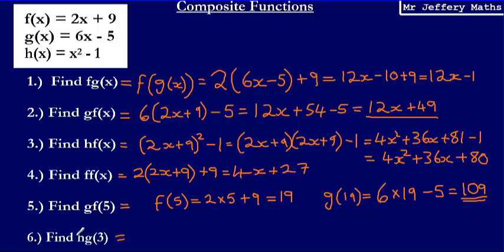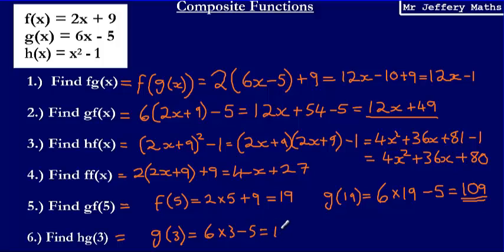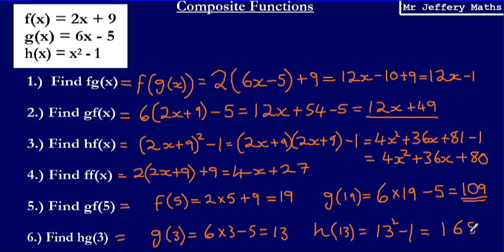Final question: h of g of 3. We haven't worked out h of g of x explicitly, so we'll use the step-by-step method again. First, working out g(3): that's 6 multiplied by 3 minus 5, which gives 18 minus 5, so 13. Then substituting this into h(x): h(13) is 13 squared minus 1. 13 squared is 169, take away 1 for a final answer of 168.